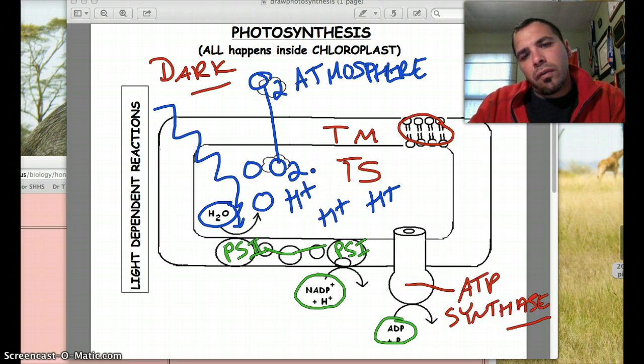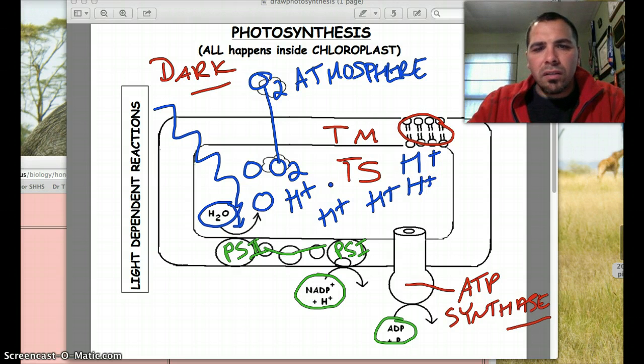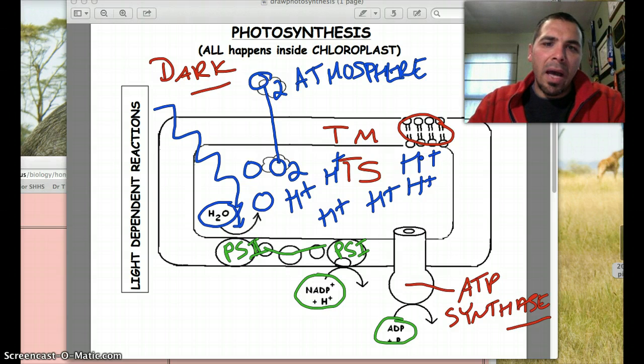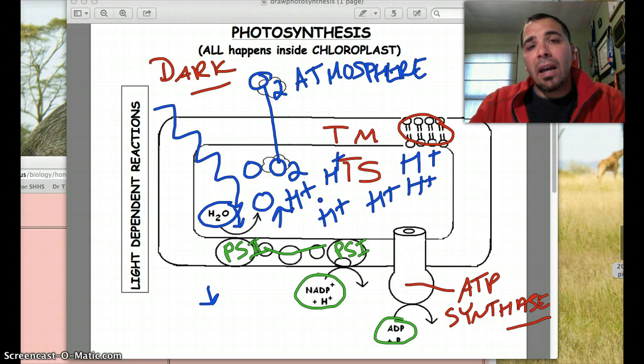These hydrogens are going to stay in there. This is that thylakoid space. So what's going to happen is eventually we're going to get a lot of hydrogens in here, and they're going to form what you remember is a concentration gradient. And so remember, material is moving from high to low. We have a high concentration of hydrogens on the inside, not so many on the outside.